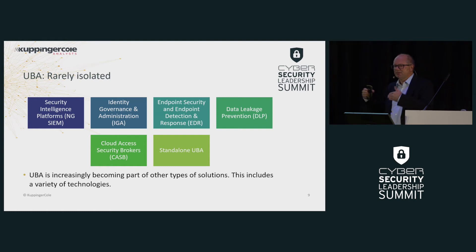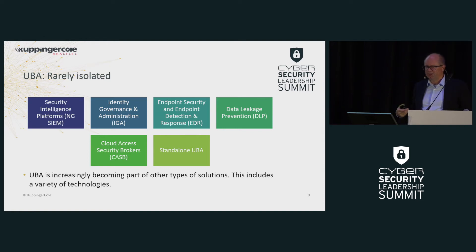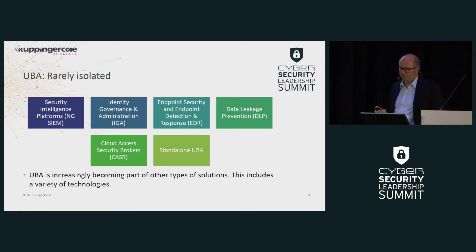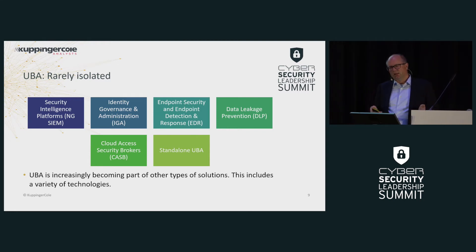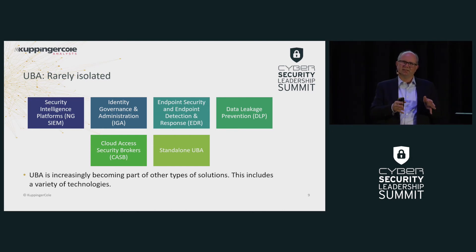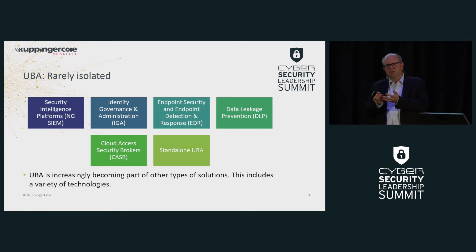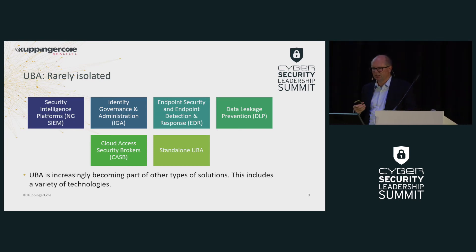UBA today is rarely available in isolation. There are still some UBA pure-play vendors, but most have already been acquired, or vendors doing something different have added it to their technology. So we have it in security intelligence platforms — what we might call next-generation SIEM platforms — in identity governance and administration, in endpoint security particularly EDR, in DLP, in cloud access security brokers, but also standalone. The logic is that it's rather integrated than a standalone solution, because it's about integrating a lot of data, making concrete use cases, and making it actionable. Just understanding the behavior is not enough.